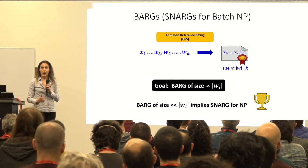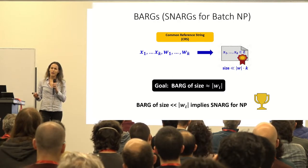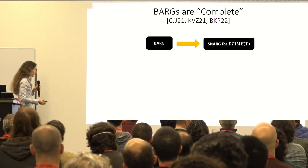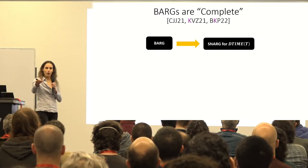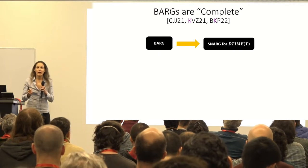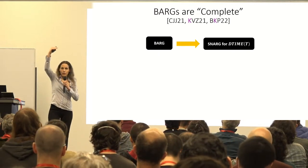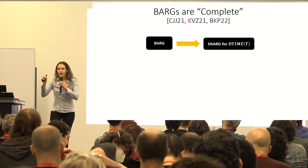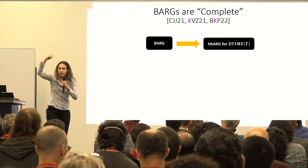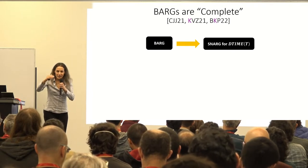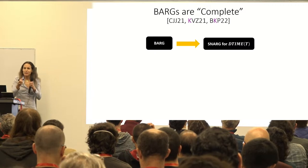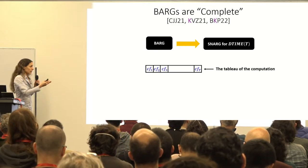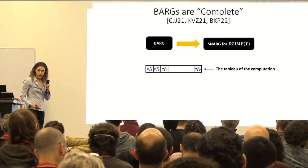Let me explain how BARGs imply SNARGs for deterministic time T. A D-time-T computation is just a bunch of local consistency checks — checking that each step was done correctly. That smells like a batch problem. Here's the construction: I write all the configurations of the Turing machine, hash them down using a hash with succinct local openings like a Merkle hash, and then give a BARG saying that for any i from 1 to T, adjacent configurations i-1 and i are consistent.